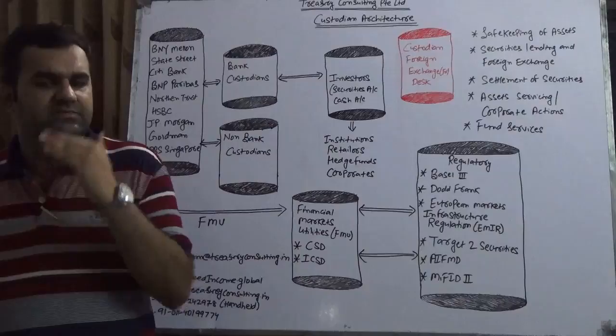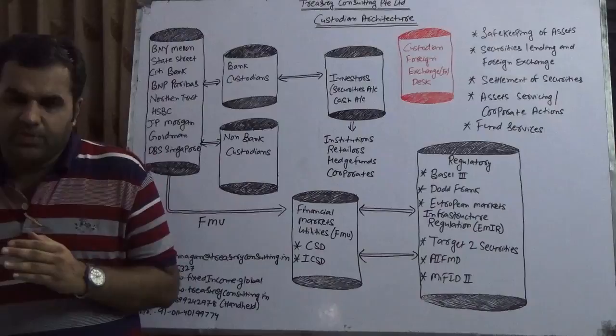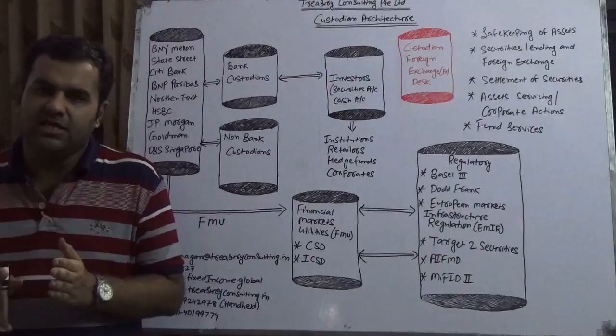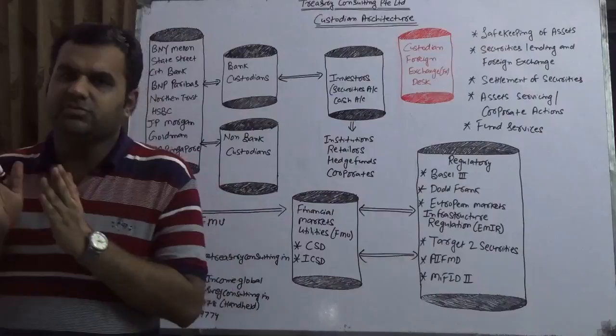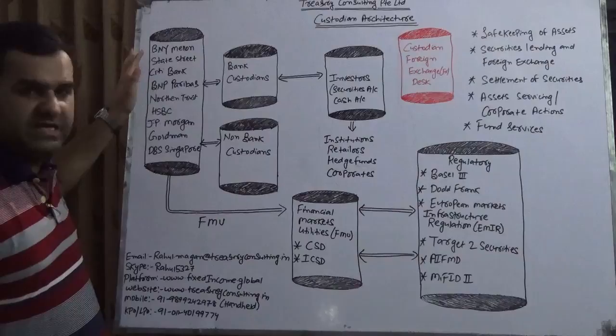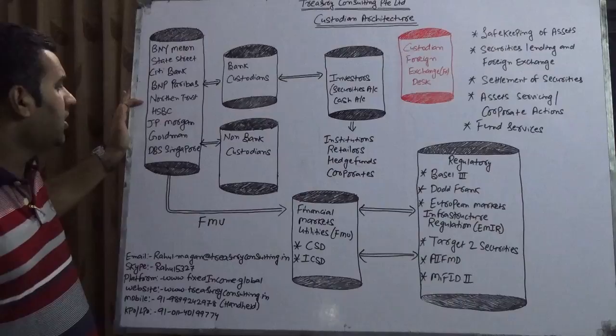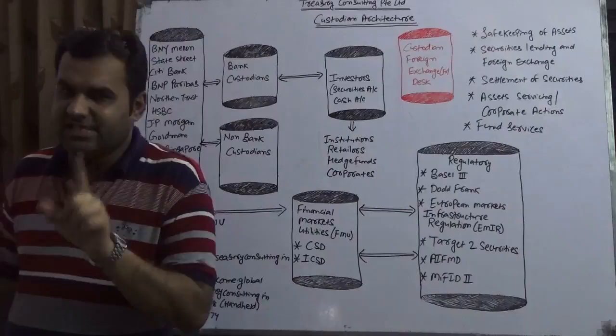Custody is the majority business of the globe. According to estimates, more than 100 trillion dollars worth of securities are in custody of various custodians. The big names include BNY Mellon, Bank of New York Mellon, State Street, Citibank, BNP Paribas, Northern Trust, HSBC, JP Morgan, Goldman, and DBS Singapore. Of course, the list is endless.